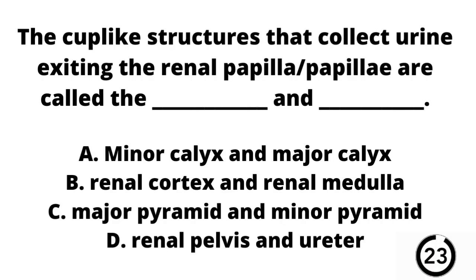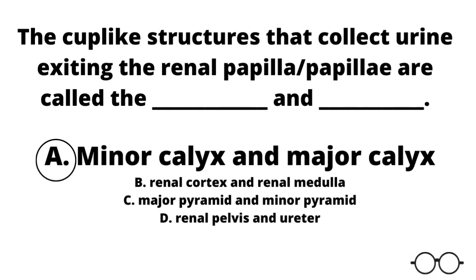Question number nine. The cup-like structures that collect urine exiting the renal papillae are called the blank and blank? A the minor calyx and major calyx, B the renal cortex and renal medulla, C the major pyramid and minor pyramid, or D the renal pelvis and ureter? Our answer here is A — the minor calyx and major calyx. The plural for calyx is calyces, C-A-L-Y-C-E-S.